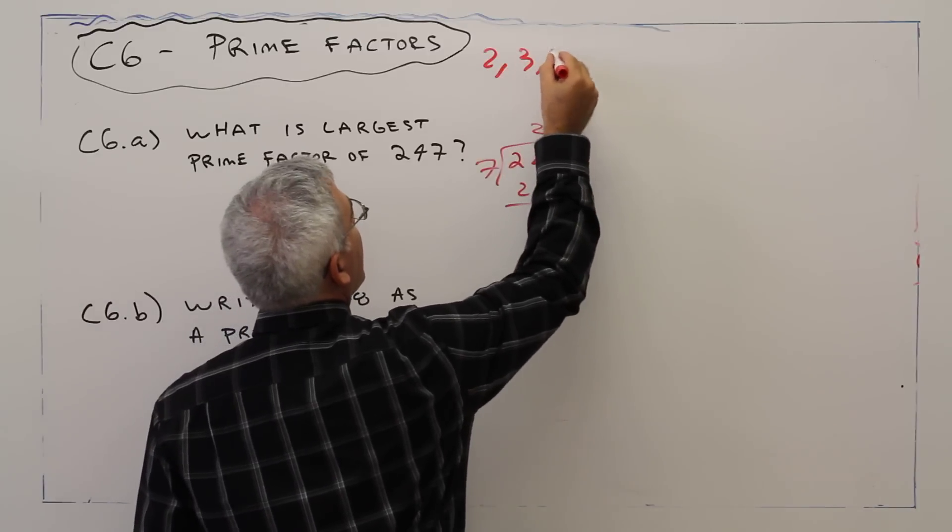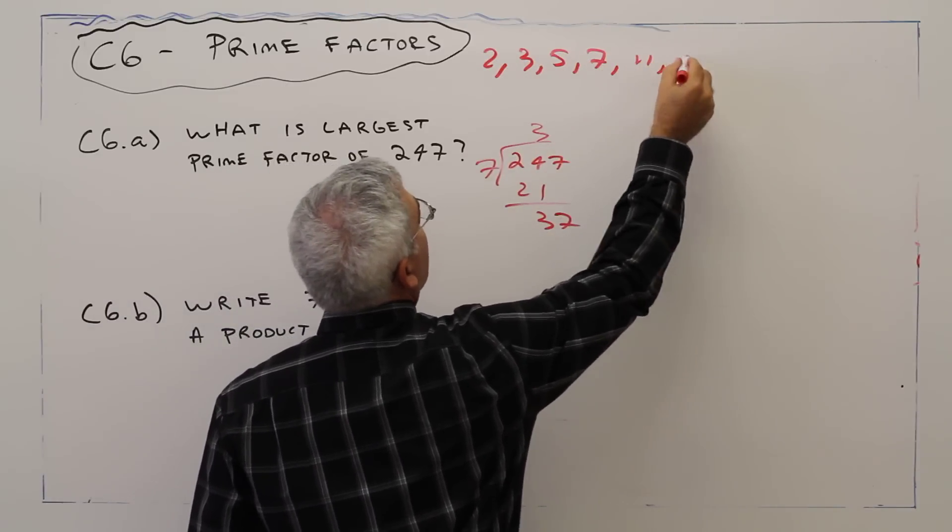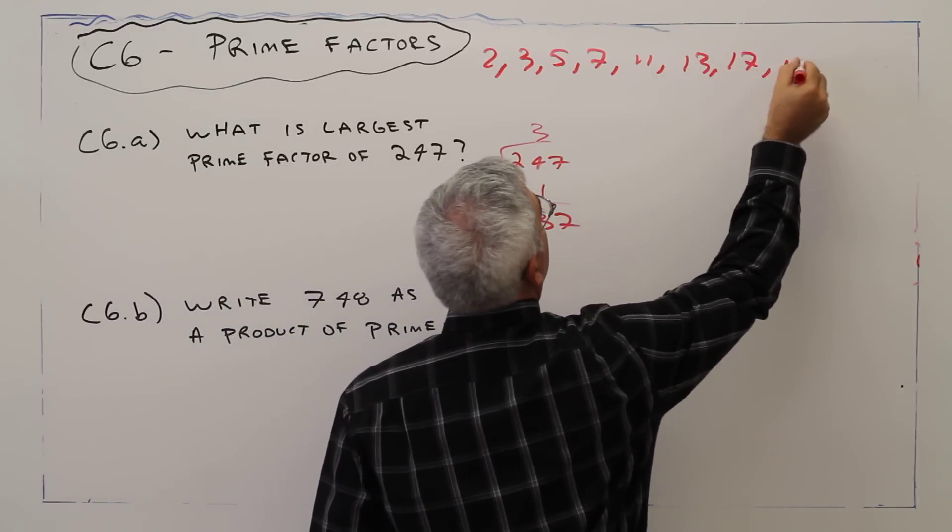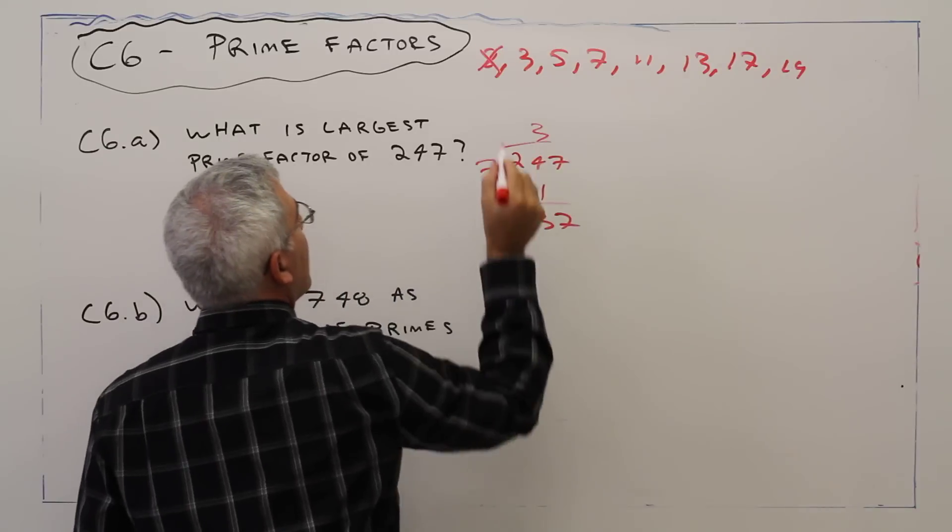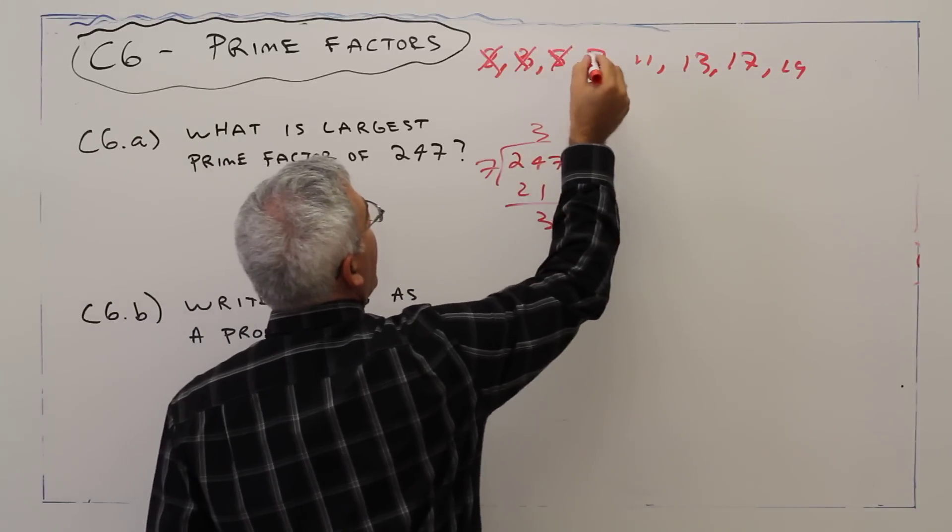So I'll just make a list. 2, 3, 5, 7, 11, 13, 17, 19. So no 2, no 3, no 5, no 7.